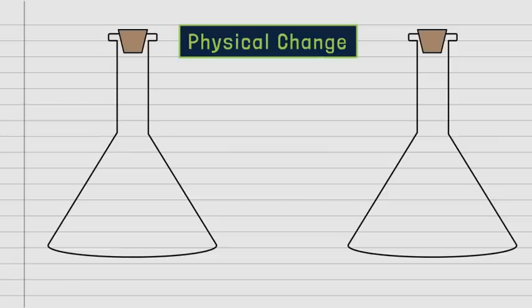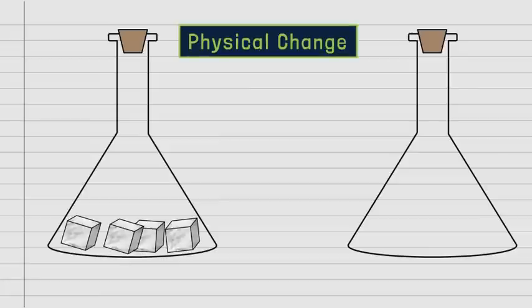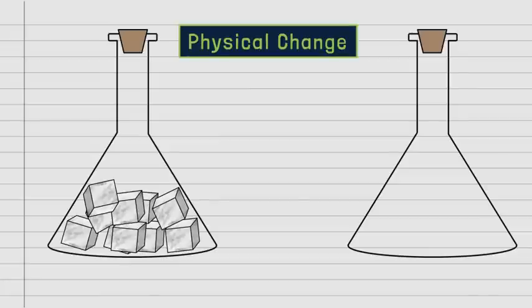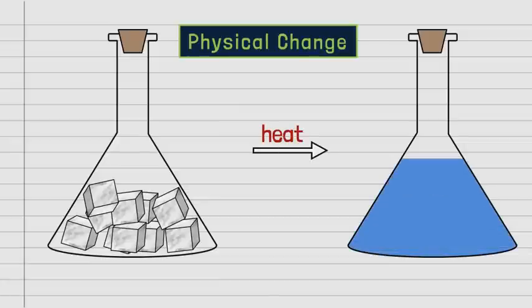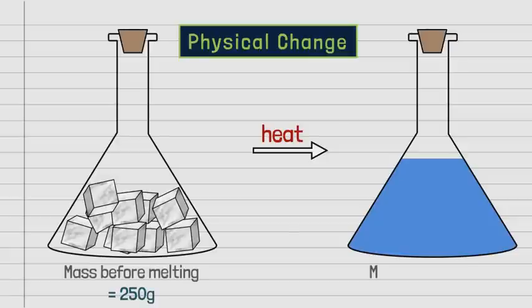Physical Change: Let's take a conical flask and put 250 grams of ice cubes in it. Close the opening with a cork, then heat it until it changes to water completely. You will find it is still 250 grams — there is no change in weight. So the physical change of ice into water follows the law of conservation of mass.